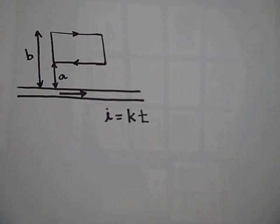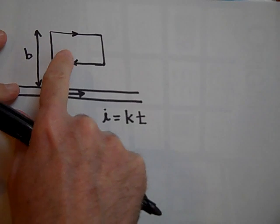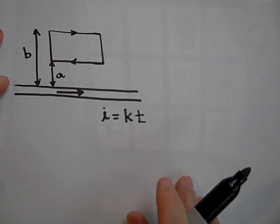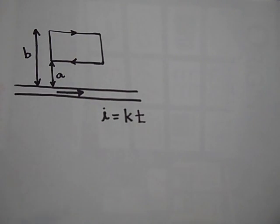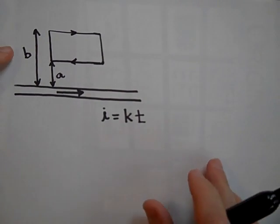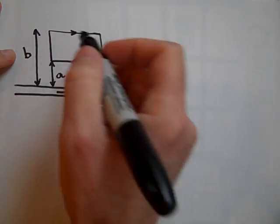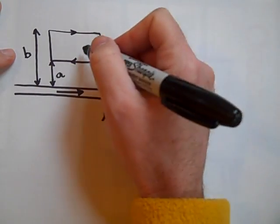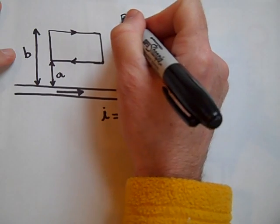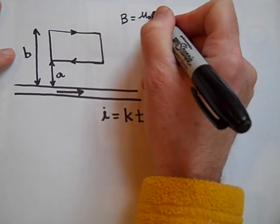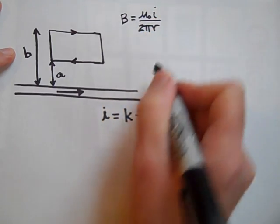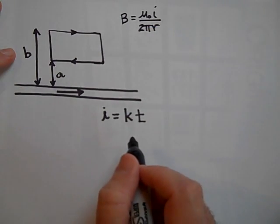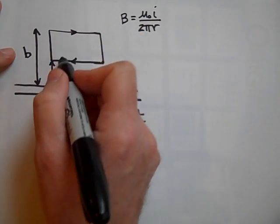Now I'd like to find the flux. Can you find the flux in this coil? It's a distance a away here and b away from there. First of all, you need to know that the field is changing as you go out. The magnetic field, if you used Ampere's law, you'd know that it was μ₀ times I all over 2πr.